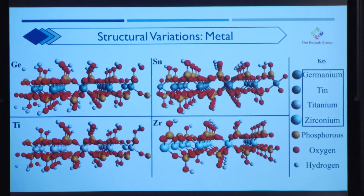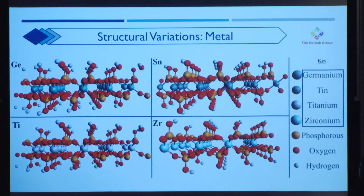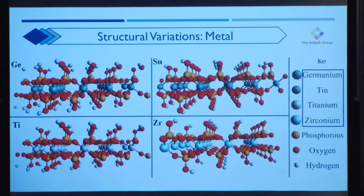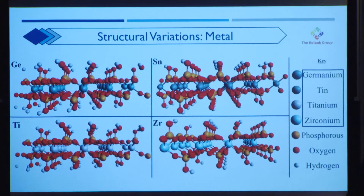The first major type of structural variation was varying the core metal within the metallic phosphate frameworks. We chose four different metals — germanium, tin, titanium, and zirconium — to capture a range of periodic trends across the table, such as atomic radius. As you can see on the screen, these four frameworks are incredibly similar; however, there are slight differences caused by the different bond lengths each metal has when bonding to the phosphorus within the framework. Because of these different bond lengths, there were corresponding differences in energy and energy density that we then analyzed.